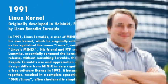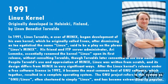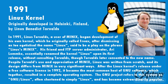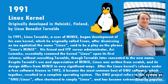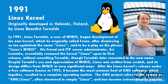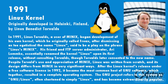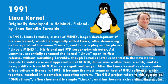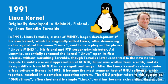In 1991, in Helsinki, Finland, Linus Torvalds began development of his own kernel. Despite his use and appreciation of Minix, Linux was written from scratch, and its design differs from Minix in very significant ways. After the Linux kernel's release under a free software license in 1992, it became the most common host of GNU software, which together resulted in a complete free and open source operating system. The GNU project refers to this system as GNU slash Linux, but this name is often shortened to simply Linux, leading to some controversy.